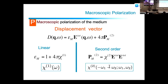The notation -omega1 - omega2 means the emitted frequency; the material absorbs omega1 and omega2 and emits their sum. If the sign were minus omega1, the process would be difference frequency generation. All processes are captured within this expression.